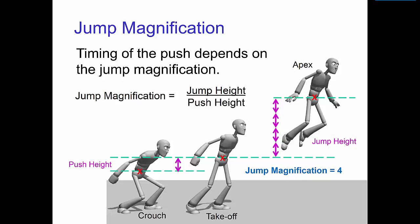The ratio of the jump to push heights is the jump magnification. That is, the jump magnification equals the jump height from takeoff to apex divided by the push height from crouch to takeoff.